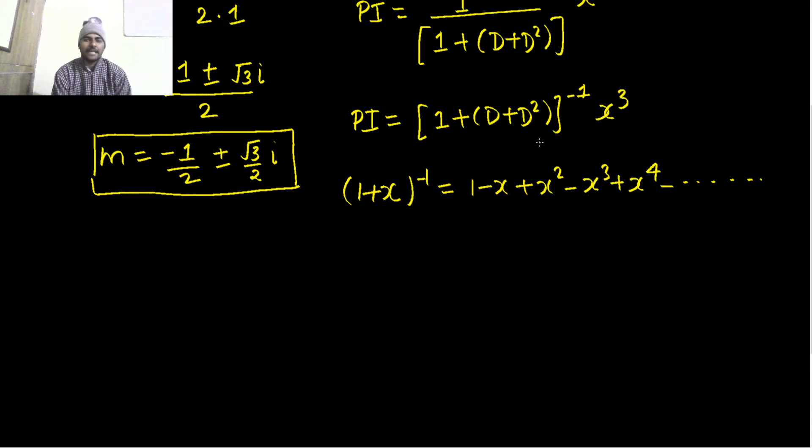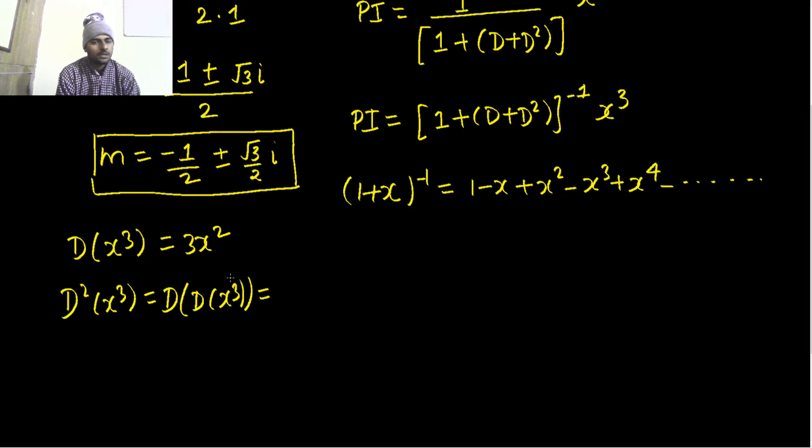Let's check the derivatives of x³ first. The first derivative D of x³ is 3x². Second derivative is derivative of the first derivative, which is 6x. Third derivative will be 6.